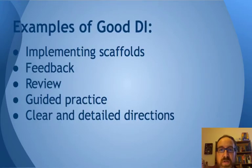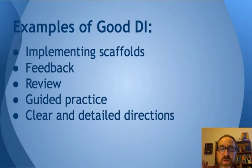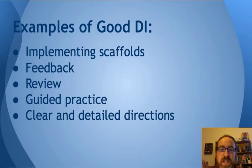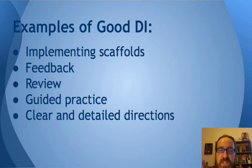Here are some examples of good direct instruction. Implementing scaffolds — supporting student learning in a specific way usually requires the teacher to do direct instruction. Feedback — grading and evaluating tests is direct instruction. Reviewing in class. There are ways of doing indirect instruction with review, but most of the time a teacher is going to review something and go through test questions to help students understand correct answers. Guided practice — we do this a lot in class where the teacher gives direct instruction as to how to complete specific activities.